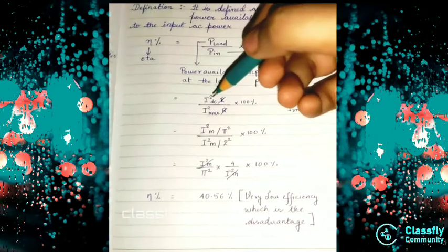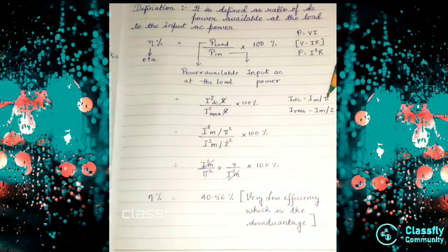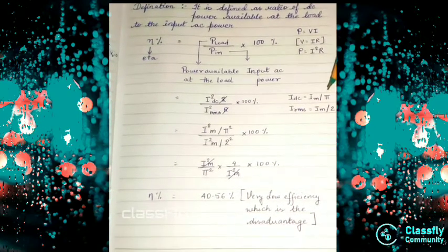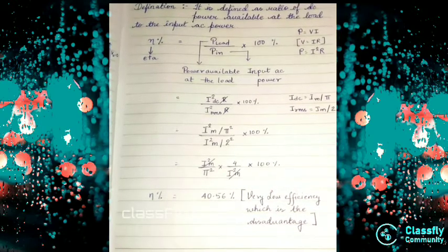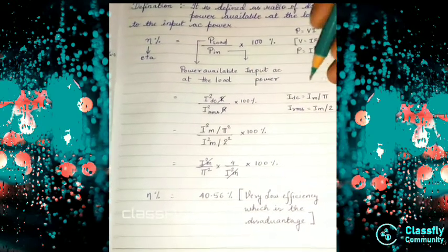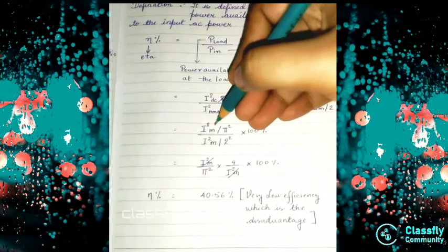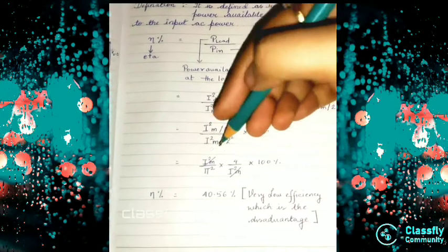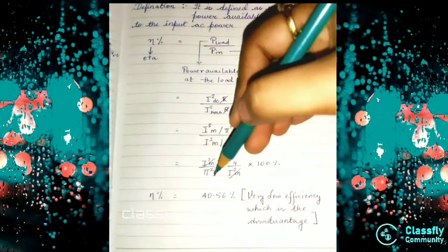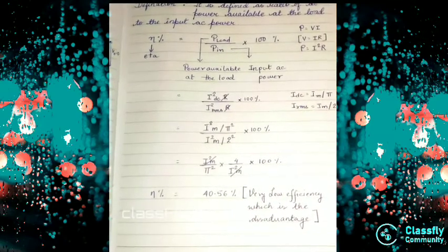Now, I_DC = I_M/π (we derived this in previous lectures) and I_RMS = I_M/2. Substituting these, I²_DC = I²_M/π², and I_RMS as I_M by 2.